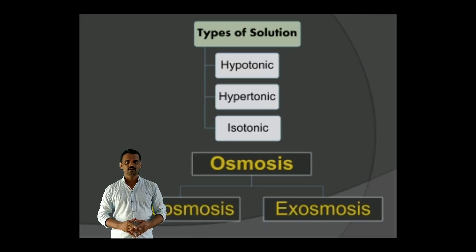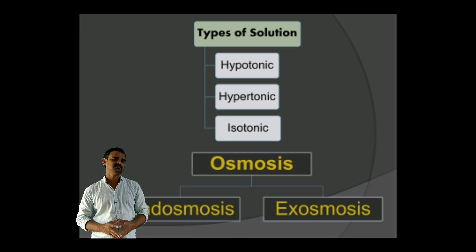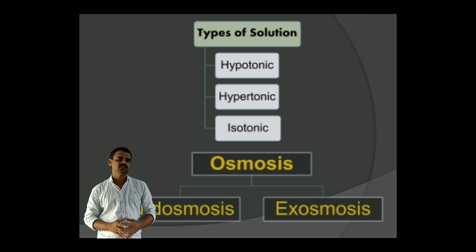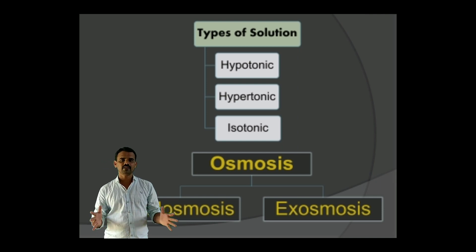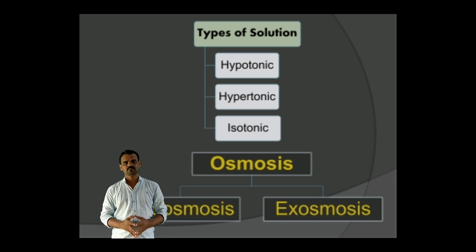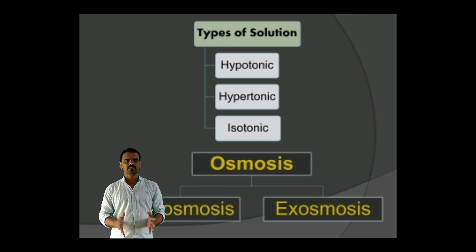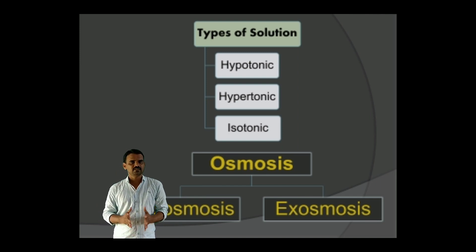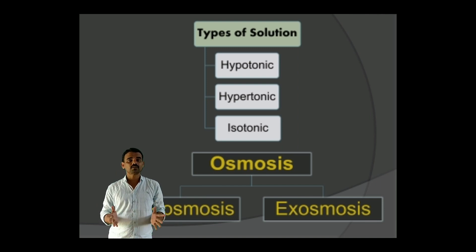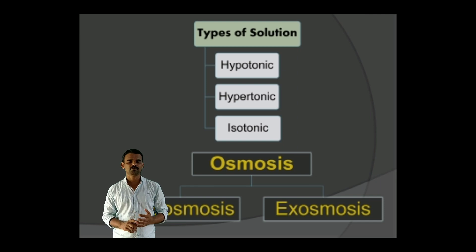In Osmosis we have seen that there are three kinds of solutions: Hypotonic solution, Hypertonic solution, and Isotonic solution. There are also two kinds of Osmosis — Endosmosis and Exosmosis.